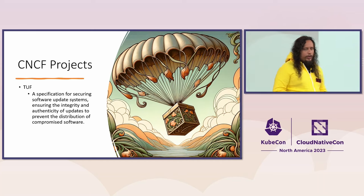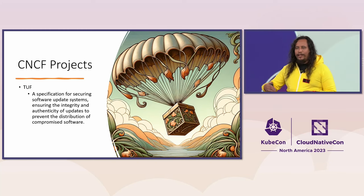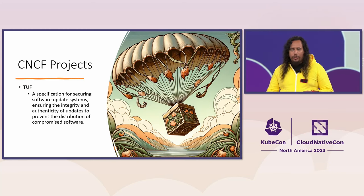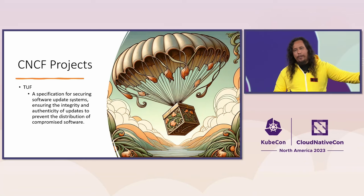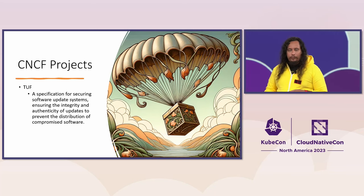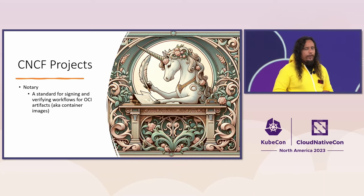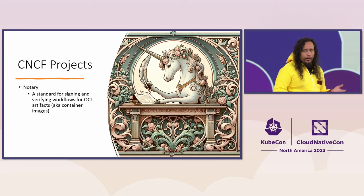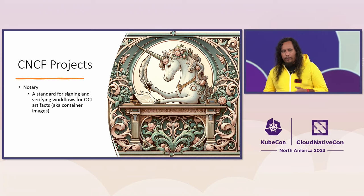Another CNCF project is TUF, which is a specification for securing software updates. Once you produce an artifact, you have to be able to deliver it safely to your destination. TUF helps in that delivery by ensuring the integrity and authenticity of updates — ensuring it was not tampered with, and also making sure nobody sent an older properly-signed version to roll you back into a broken version. There is also Notary, which is a standard and set of projects for signing and verifying workflows for OCI artifacts or container images. There's a lot of interesting work going on in Notary — another fantastic place to contribute.